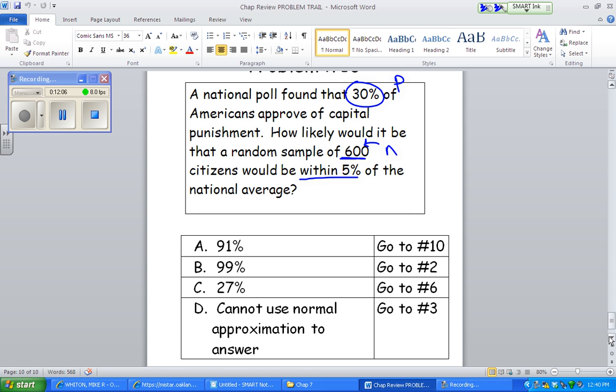Okay, N times P. 600 times 0.3. Is that greater than or equal to 10? And N times 1 minus P. Okay, and again, verify those both are larger than 10. So, normal is good. Normal approximation can be used.